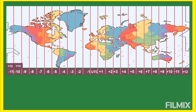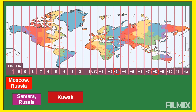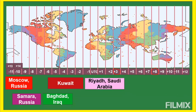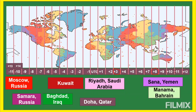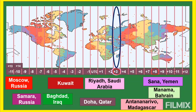Next is GMT+3, meaning these countries are three hours ahead of UTC. The Philippines at GMT+8 is five hours ahead on standard time, or four hours ahead for those observing Daylight Saving Time. These places include Moscow (Russia), Samara (Russia), Kuwait, Baghdad (Iraq), Riyadh (Saudi Arabia), Manama (Bahrain), Doha (Qatar), Sana'a (Yemen), Antananarivo (Madagascar), and other places under GMT+3 that I didn't mention.